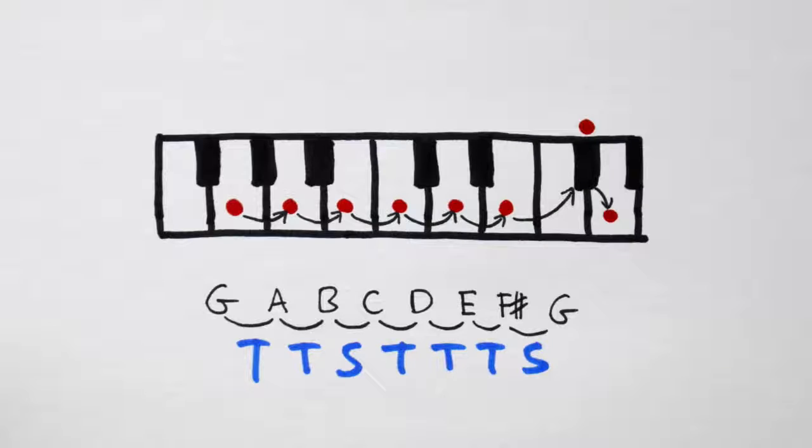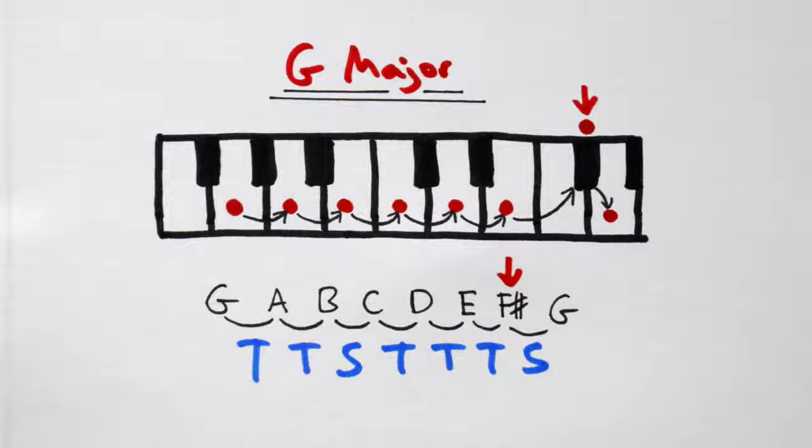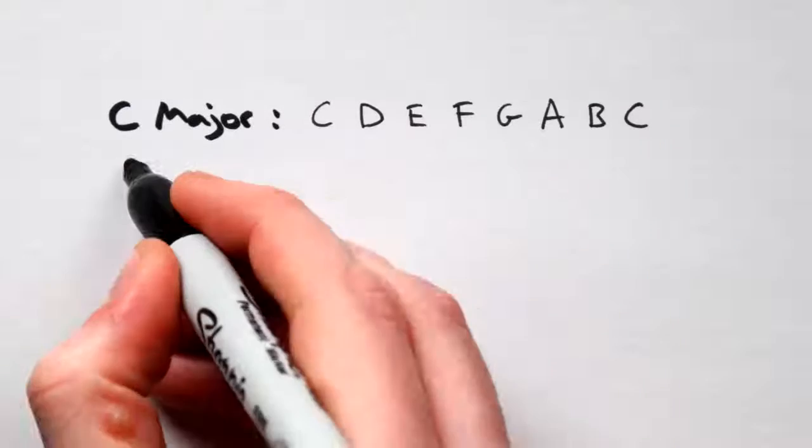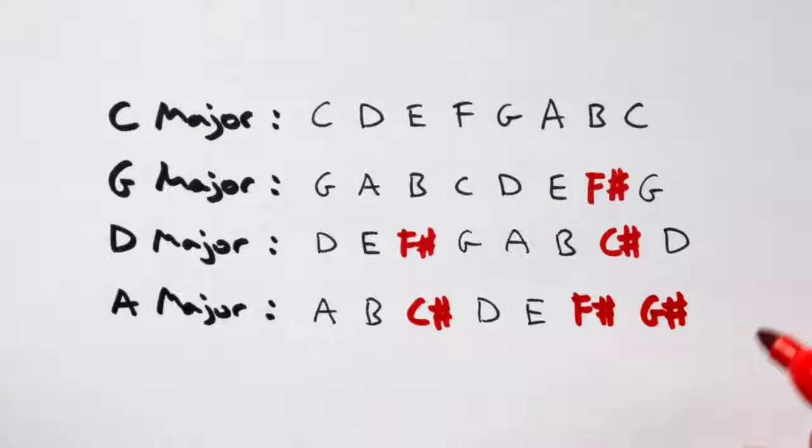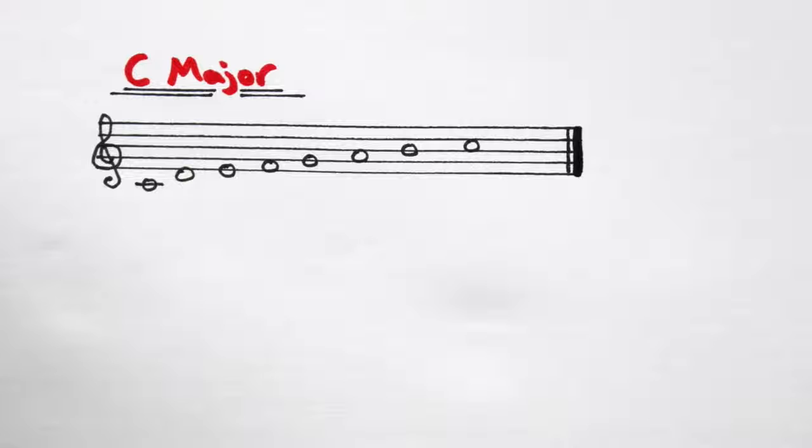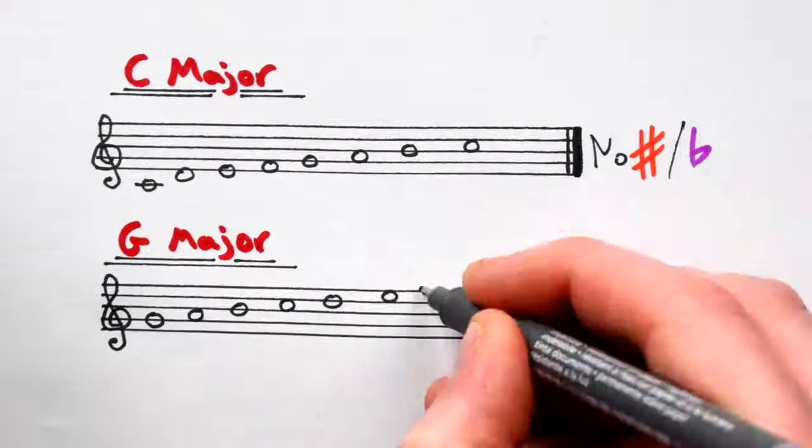These are the notes of the scale of G major. Notice how we had to throw in an old sharp in order to stick to our formula. This is entirely normal. Different scales will have different collections of white and black notes. But all you need to remember for now is that C major has no sharps or flats, and G major has one sharp. F sharp.